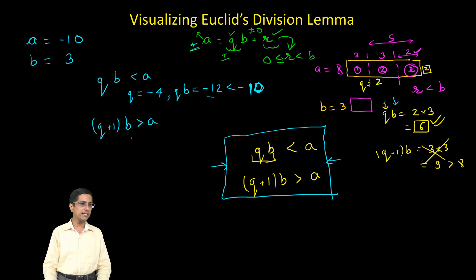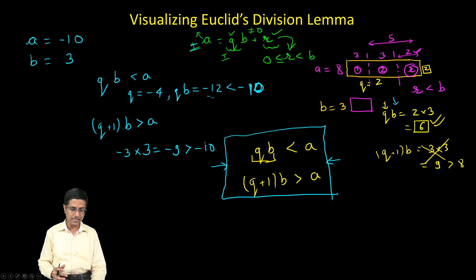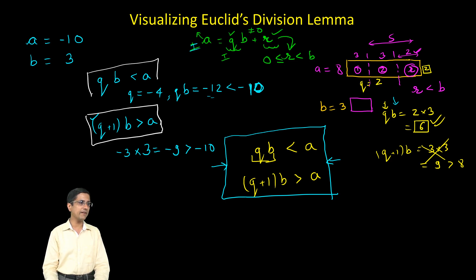What is the value of Q plus 1 B? This comes out to be minus 4 plus 1. So Q plus 1 is minus 4 plus 1 which is minus 3. So this becomes minus 3 into B is 3 still. So this becomes minus 9 and now my minus 9 is bigger than minus 10 because we are looking at negative numbers. So minus 9 is towards the 0 so it is bigger than minus 10. So at this point I can say that both my inequalities are satisfied and therefore the value of Q that I need to choose is equal to minus 4.